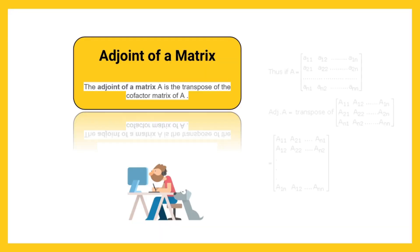Adjoint of matrix. The adjoint of a square matrix A equals small a_ij (n×n) is defined as the transpose of the matrix capital A_ij (n×n), where capital A_ij is the cofactor of the element small a_ij.